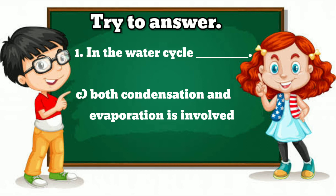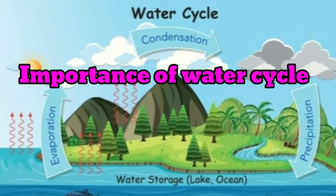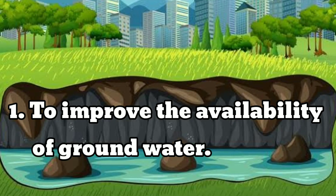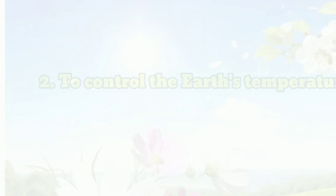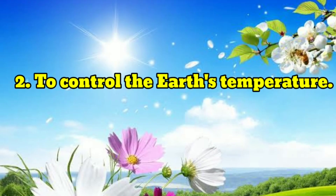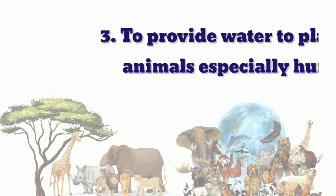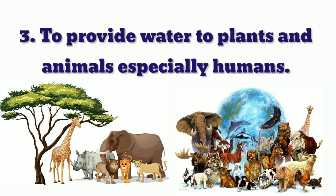Good children, let's see the importance of water cycle. Nere sula cheean, munchi yaththuwam. First, to improve the availability of groundwater — nelathari nere in alawai adhigarikkradu. Next, to control the earth's temperature — booming in vepanilai kattu paduttukradu. Third, to provide water to plants and animals, especially humans.